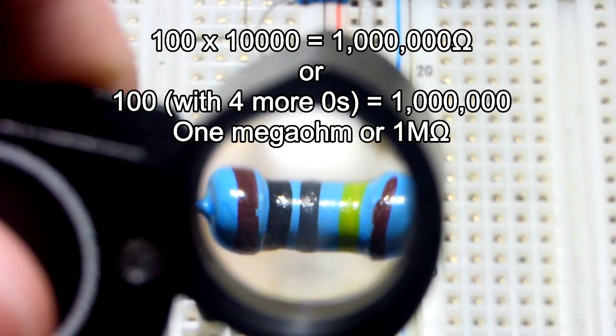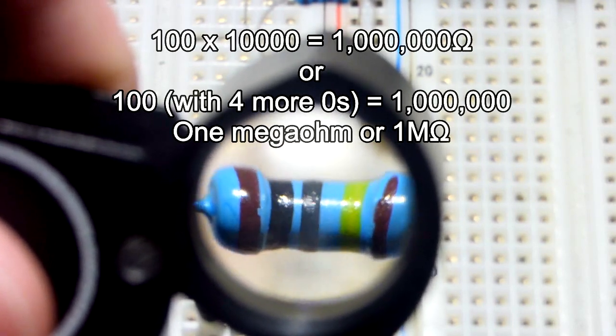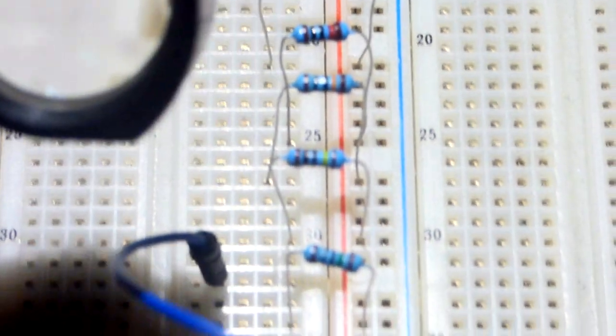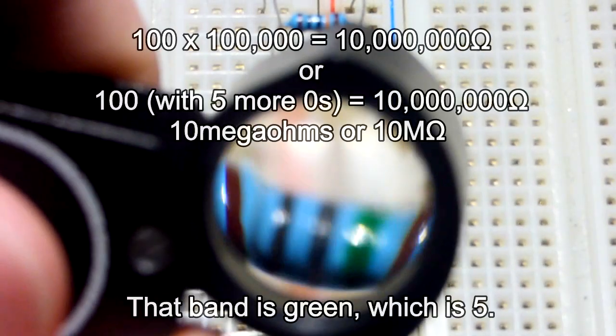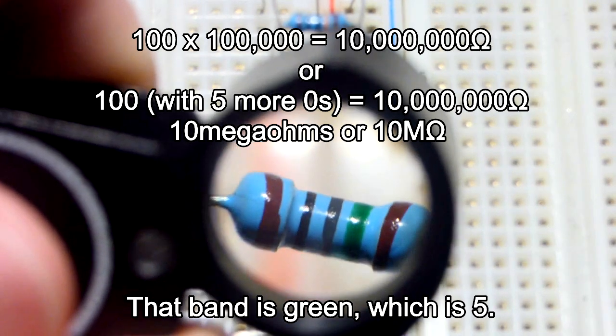So 1, 0, 0, and then 4 more 0s is 1,000,000. And the largest value resistor I have, at least in this kit, 10,000,000 ohm resistor.